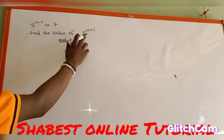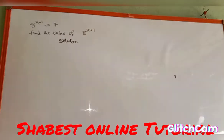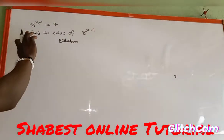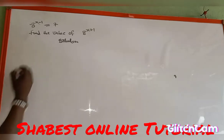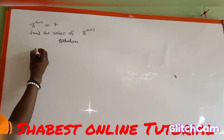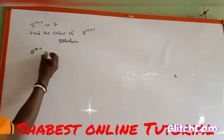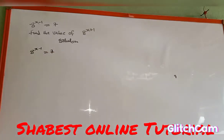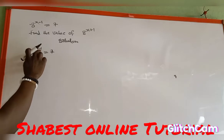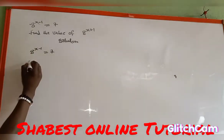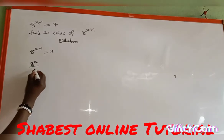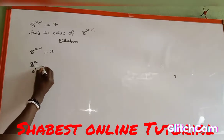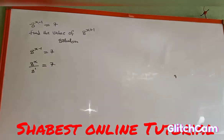We are asked to find the value of 8 to the power of s plus 1, and the equation is 8 to the power of s minus 1 is equal to 7. Remember, this 8 to the power of s minus 1 can also be written as 8 to the power of s divided by 8 to the power of 1, which is equal to 7.